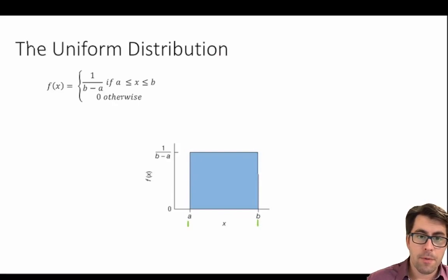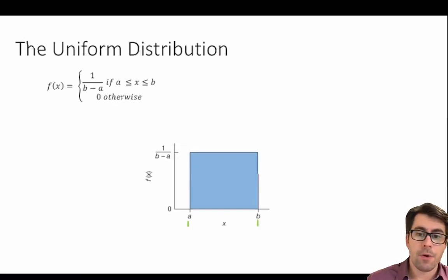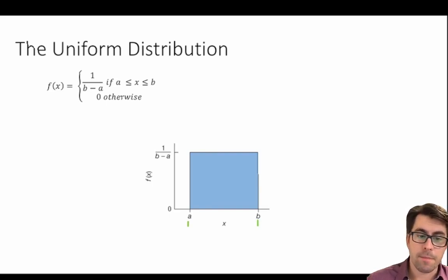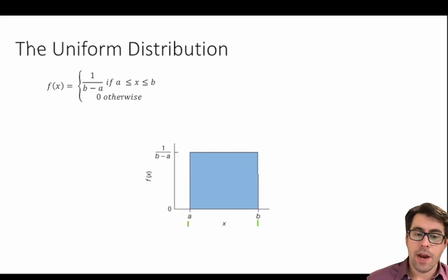The uniform probability distribution gets its name from the fact that all the probabilities for all of the outcomes are the same. Anytime you have a situation in which every outcome in the sample space is equally likely, you will use a uniform distribution.